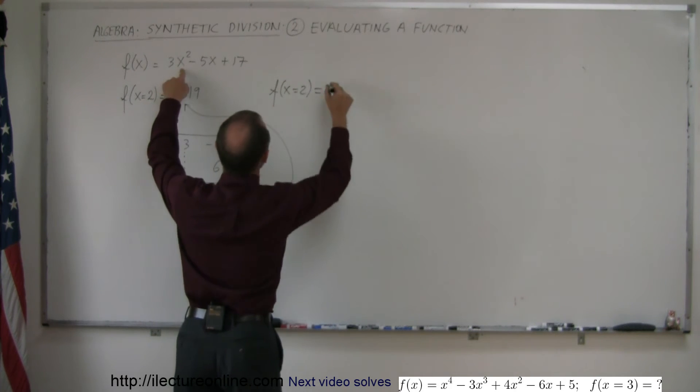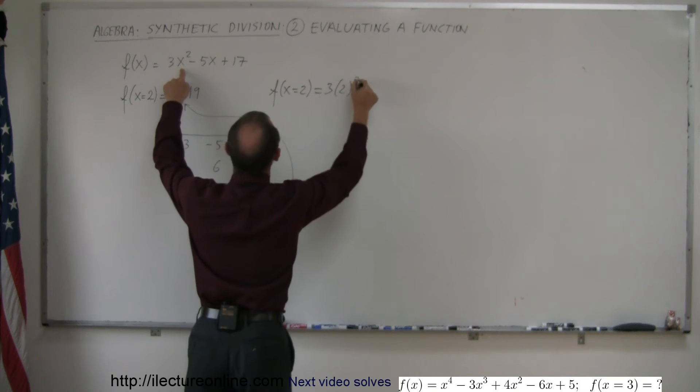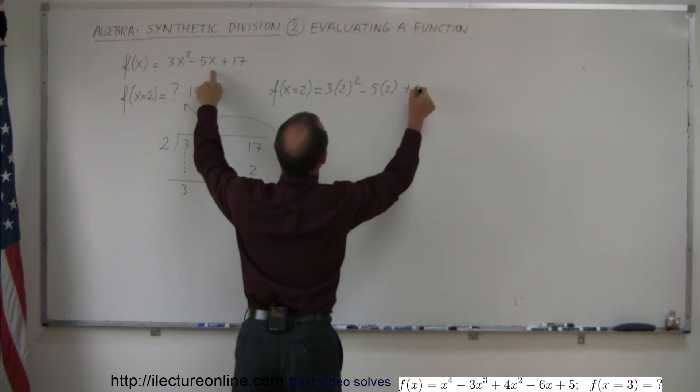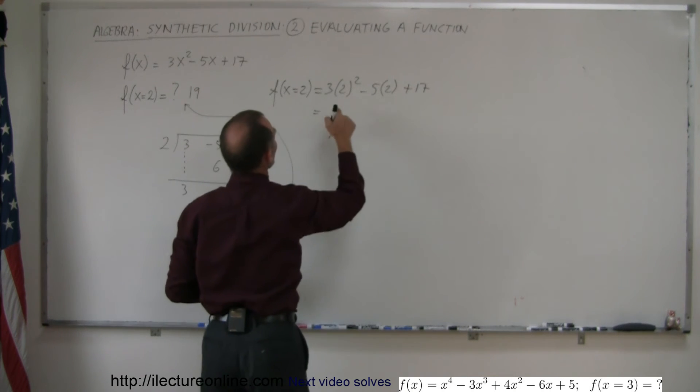instead of x, we write 2. So that would be 3 times 2², minus 5 times 2, plus 17.